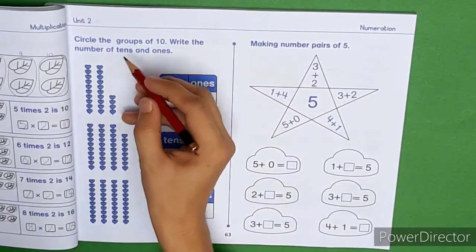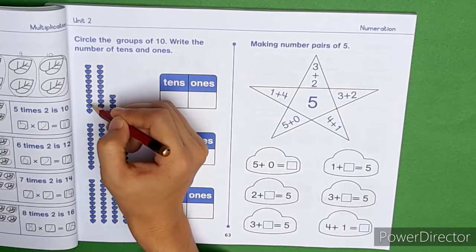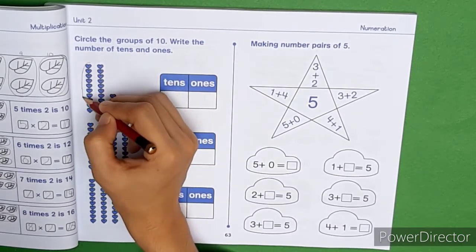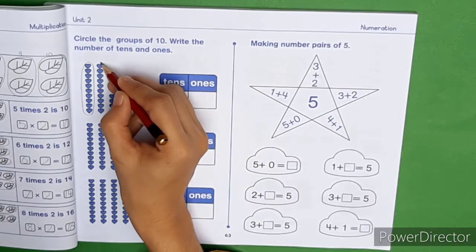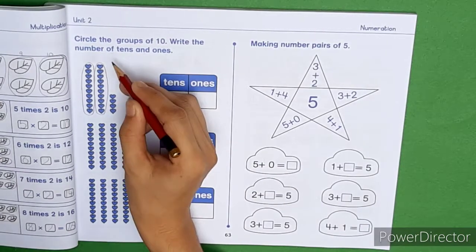So first of all, we have to do 10 grouping. 1, 2, 3, 4, 5, 6, 7, 8, 9, 10. 1, 10. This is equal. It means this is 10s, 2 tens.